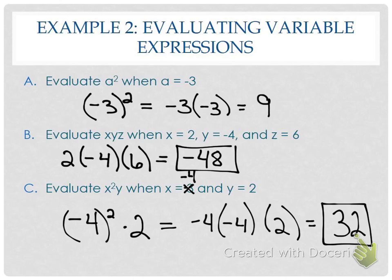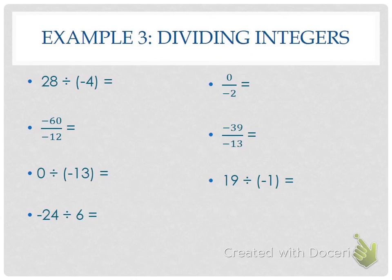Now let's look at dividing integers. The good news is that the rule is still the same — the even-odd rule. I'm looking at how many negatives I have in the expression to determine the sign of my answer. Answer all 7 of these. 28 divided by negative 4? Negative 7. Negative 6 divided by negative 12? Positive — two negatives, even number. Anything divided by 0 is just 0. Negative 24 divided by 6? Negative 4.